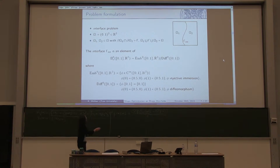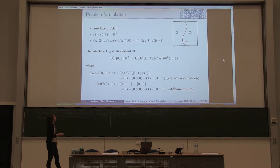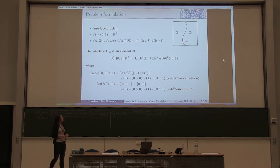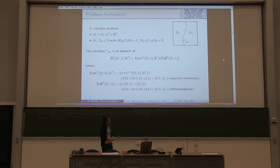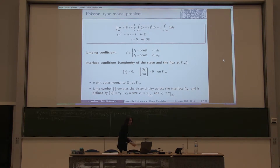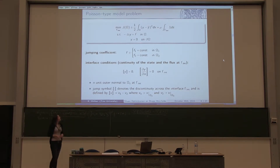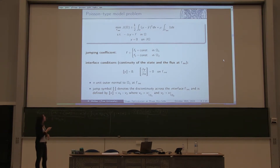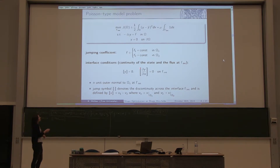I illustrate it with an interface problem. We have a domain equal to the open unit square split into two subdomains with an interface. This interface is an element of a set built in analogy to our shape space BE, with the only difference that we fix the two endpoints. We want to minimize an objective function of tracking type with parameter regularization, constrained by a Poisson equation with Dirichlet conditions and a jumping coefficient on the right-hand side. We explicitly formulate continuity of the state and flux at the interface, where the brackets denote the discontinuity across it.